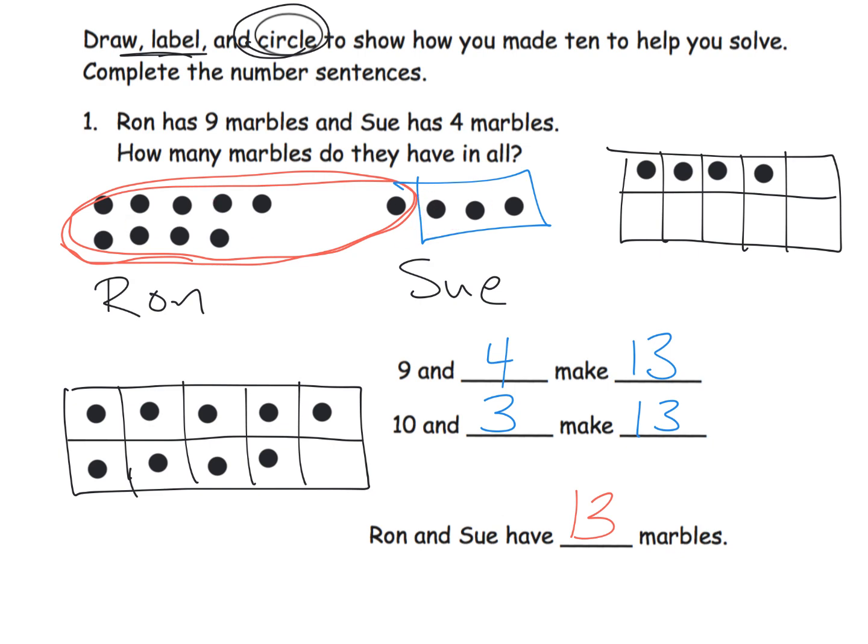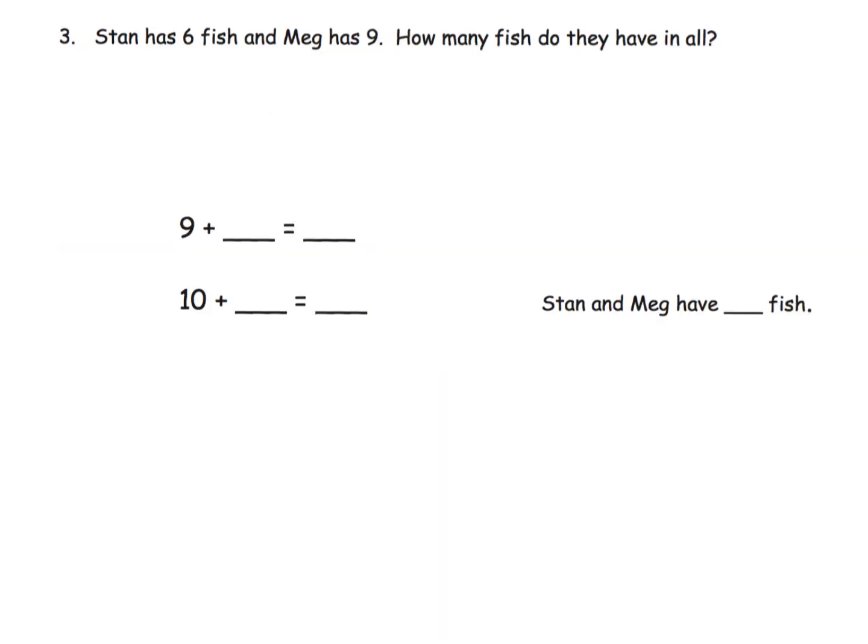Let's keep going. Stan has 6, Meg has 9. Let's draw our fish. I'm going to be really boring. Stan has 6 fish: 1, 2, 3, 4, 5, 6. And then Meg has 9: 1, 2, 3, 4, 5, 6, 7, 8, 9. There's our drawing.